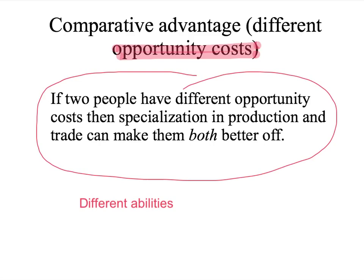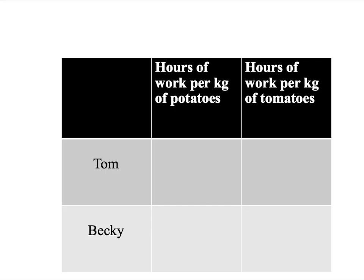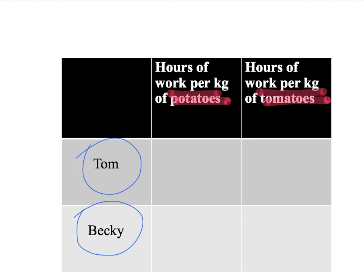People can gain by specialisation in production and trade if they have different abilities — but not just any sort of abilities. It's going to be different relative abilities. Suppose that we have two individuals: Tom and Becky. They can each undertake two productive activities: grow potatoes or grow tomatoes. They can divide their time between these two activities in any way they like.